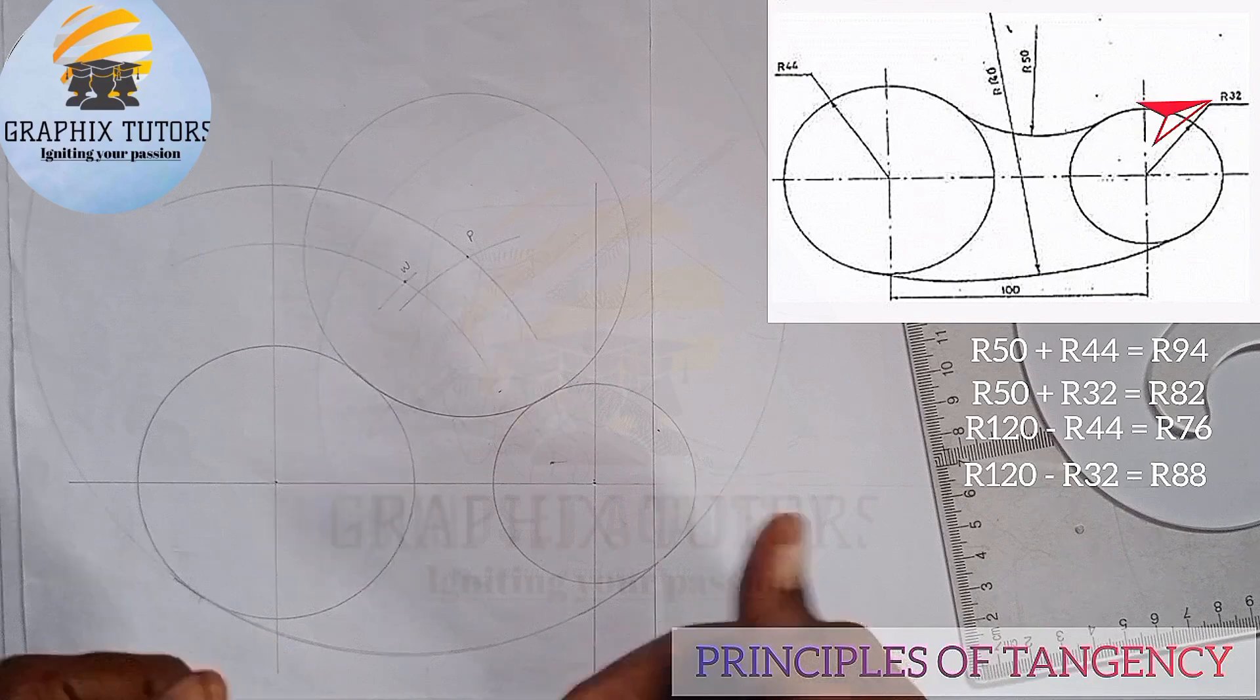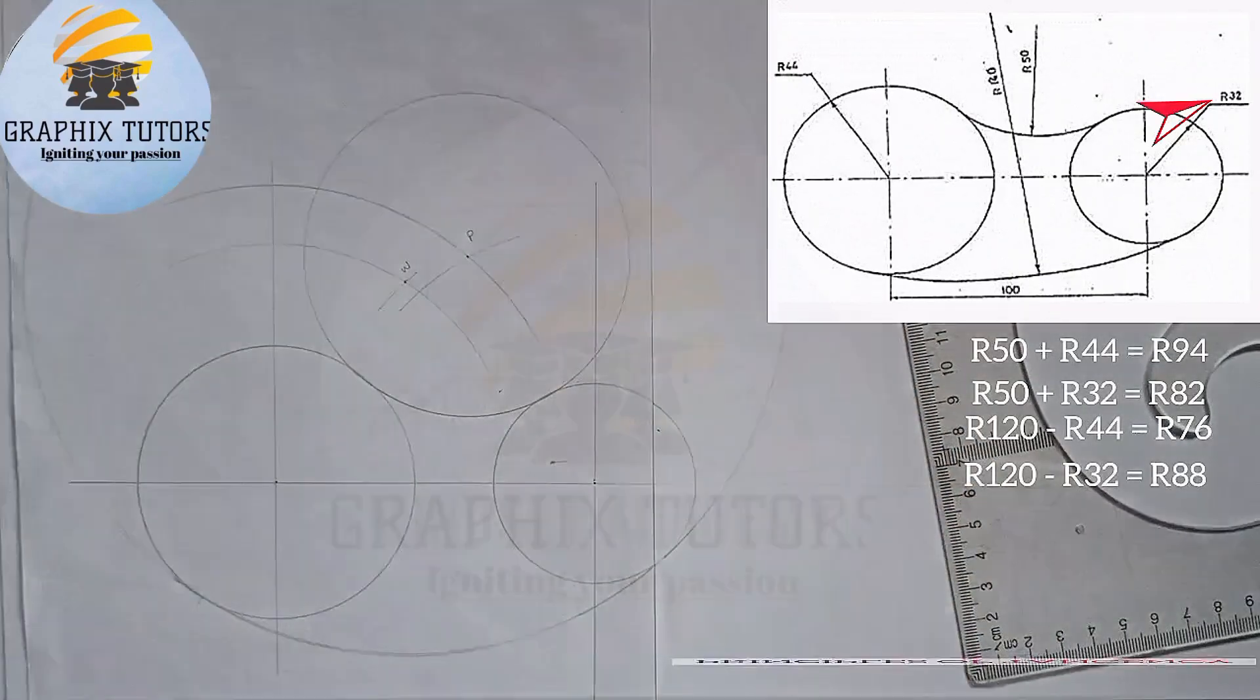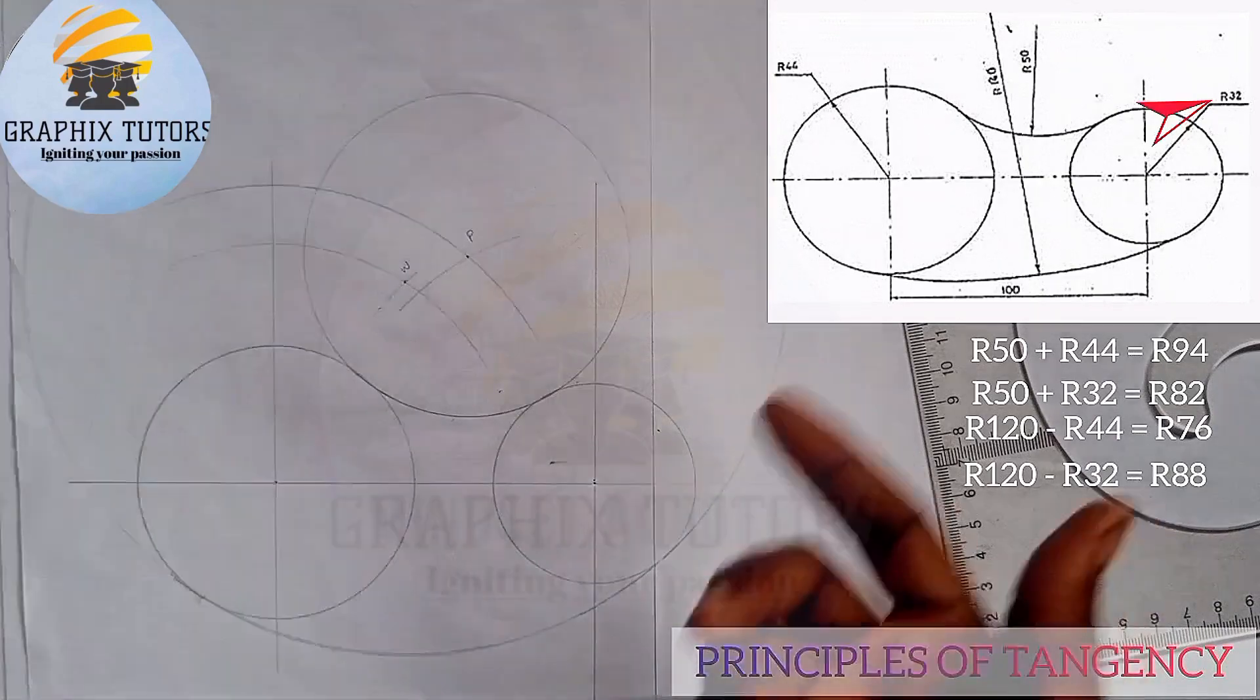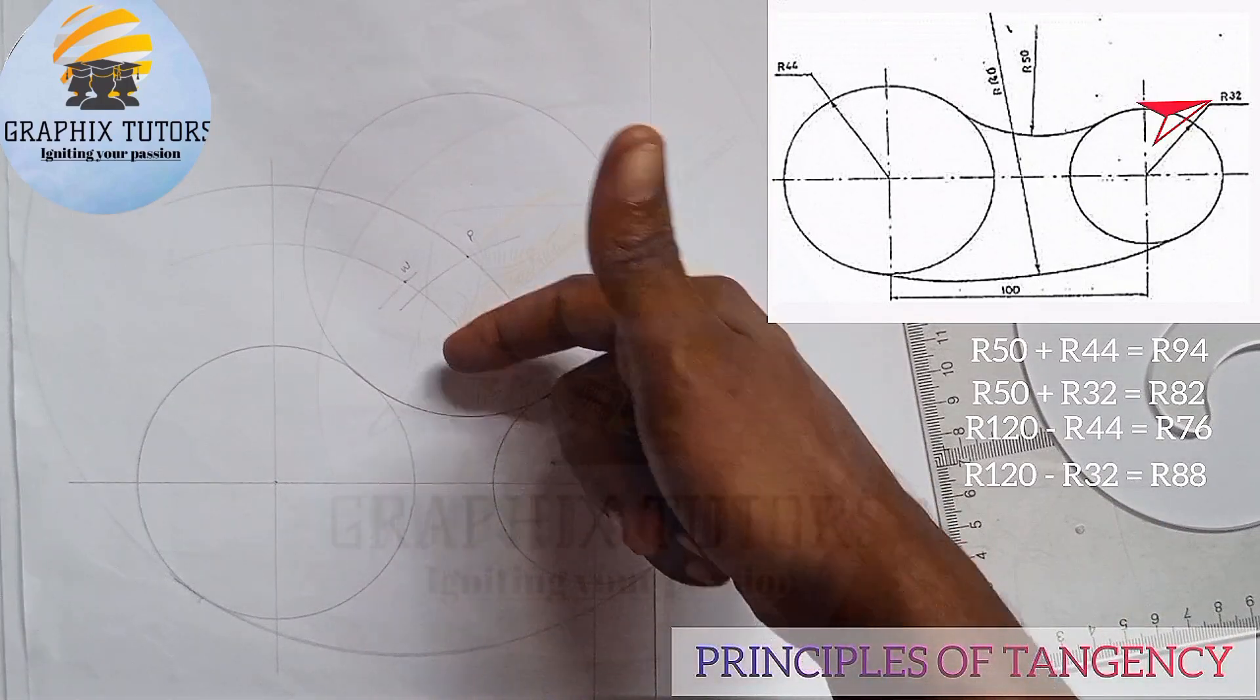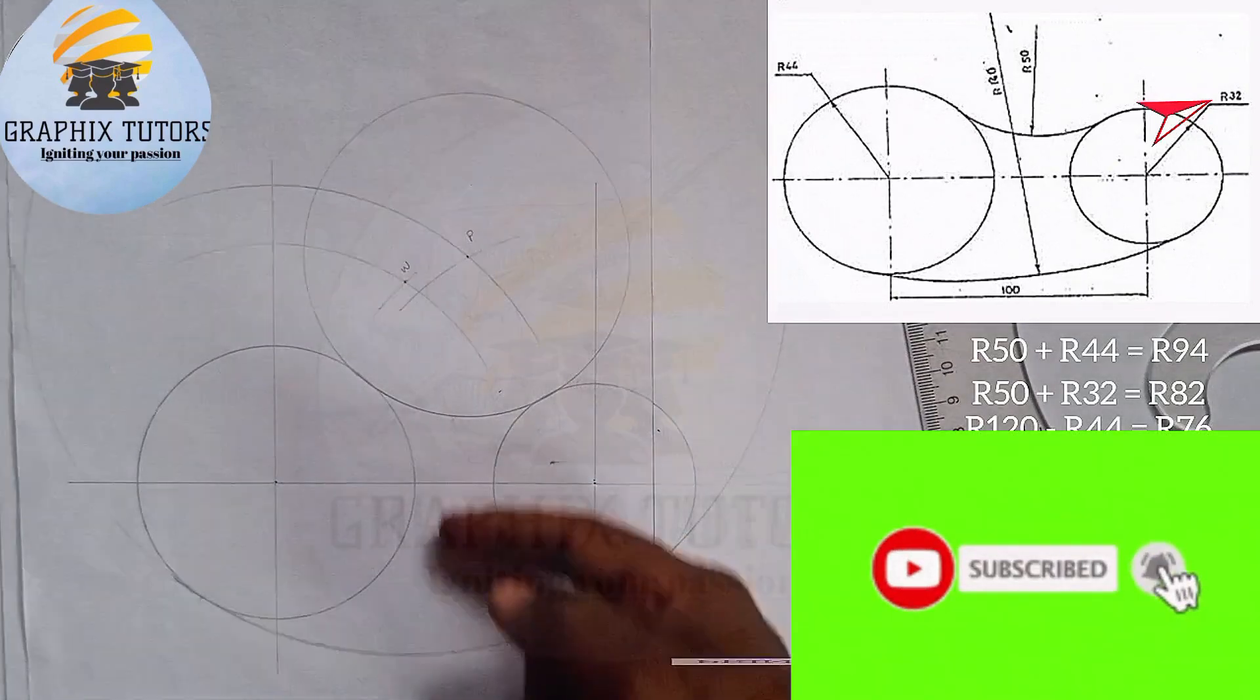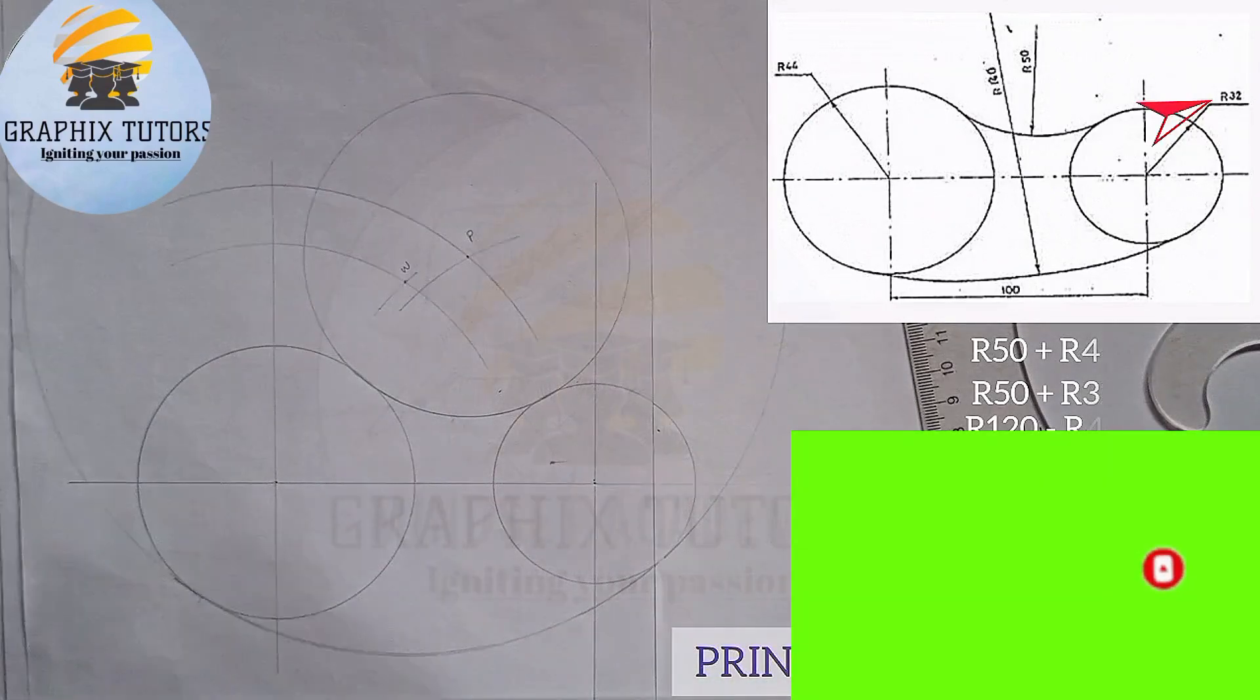Whenever the circles are external to the bigger circle, you add the radii. Is that the key now? When the circle is coming out, you subtract the radii. When the circle is coming in, you add the radii. This is what we have here.